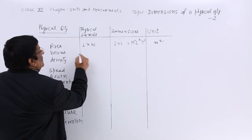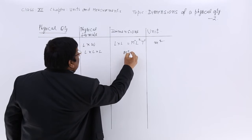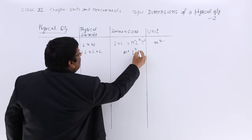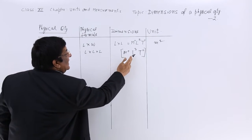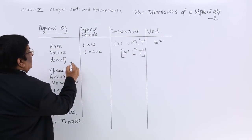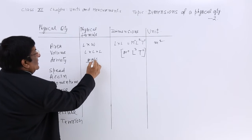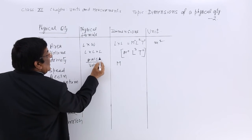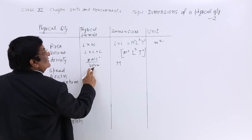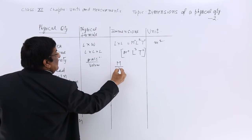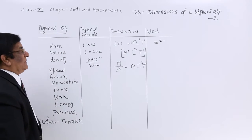Volume is length into length into length. So this is M⁰ — no mass — length to the power three dimensions, and time has no dimensions. So volume has dimensions of M⁰ L³ T⁰, meaning three dimensions of length. Then comes density. Density has the physical formula mass upon volume. Here mass has power plus one and volume has power minus one. Volume has dimensions L³, so density is M upon L³, which gives M L⁻³, with no involvement of time.